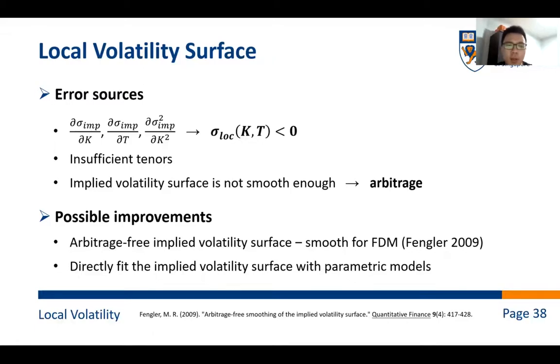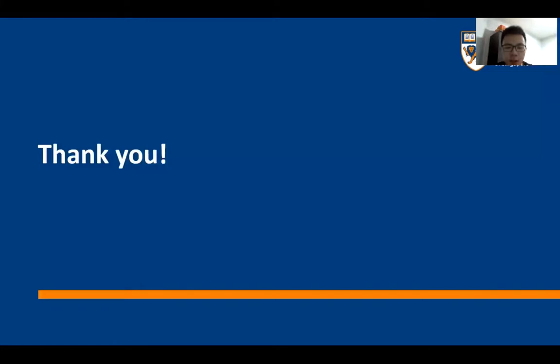According to Fengler's paper in 2009, the pricing accuracy and performance of the local volatility model depends on whether there is arbitrage on the implied volatility surface. An input implied volatility surface that is not arbitrage-free may lead to negative results and mispricing. Therefore, adding no arbitrage constraints to our quadratic or cubic splines and then constructing arbitrage-free implied volatility surface should be a good improvement. But due to the limited time, we have not successfully implemented it yet. Alternatively, we could try to fit the implied volatility surface with parametric models directly. It is also a possible way to improve. That's all about our presentation. Thank you very much.